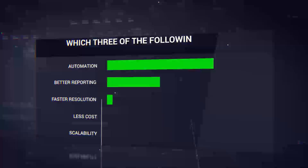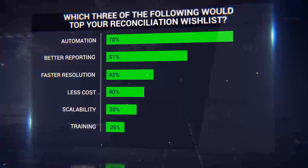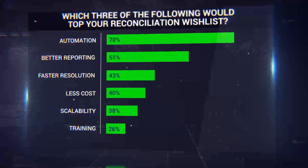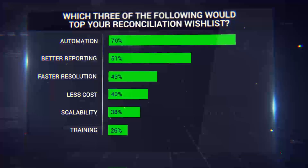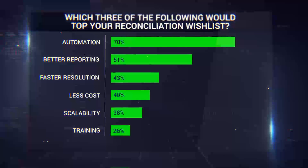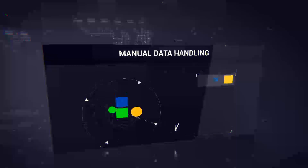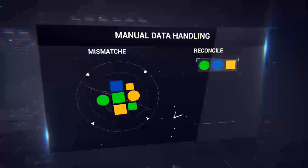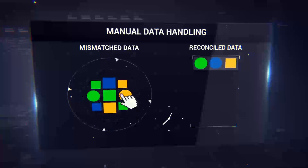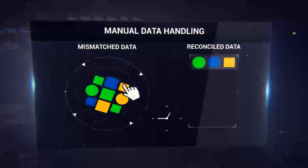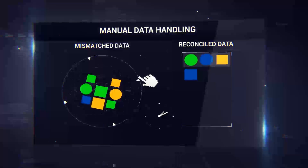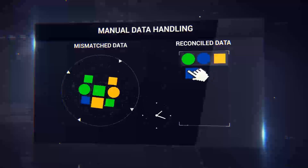When asked what tops their reconciliation wish list, automation, robust reporting, and faster resolution scored highest. To solve for systems shortcomings, survey respondents said they handle data manually.